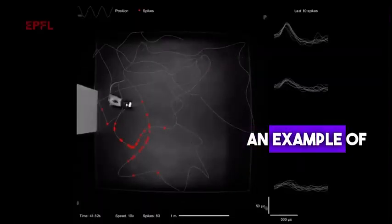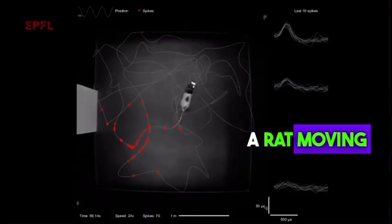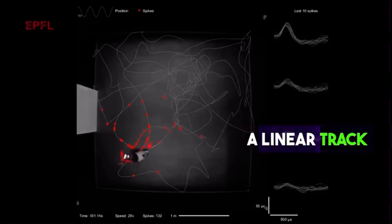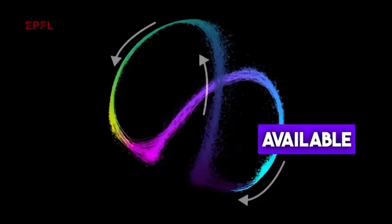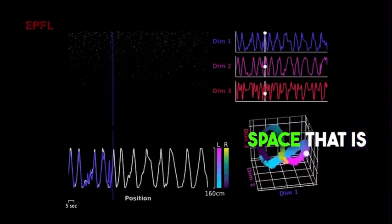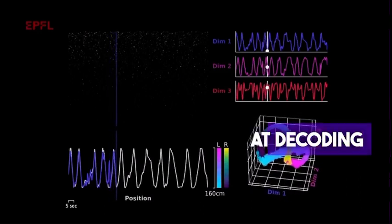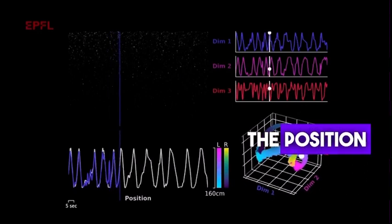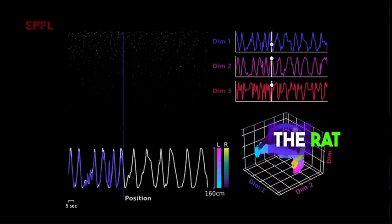Here we have an example of a rat moving up and down a linear track. We record neural activity from the hippocampus, and in this example we shape the embedding space with the position information we have available, finding an embedding space that is highly accurate at decoding the position of the rat.